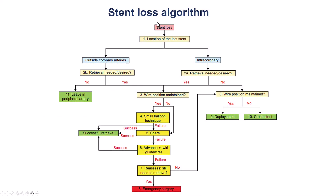This is the algorithm for stent loss. There are different possibilities depending on the location of the stent. In our case, the stent was in the coronary artery. The key question whenever we have a lost stent is whether we need to retrieve it, or whether we can leave it in place and either deploy it or crush it. Because the stent was going from the left main into the LAD — a critical location — we decided to ideally pull it out and remove it instead of deploying or crushing it.